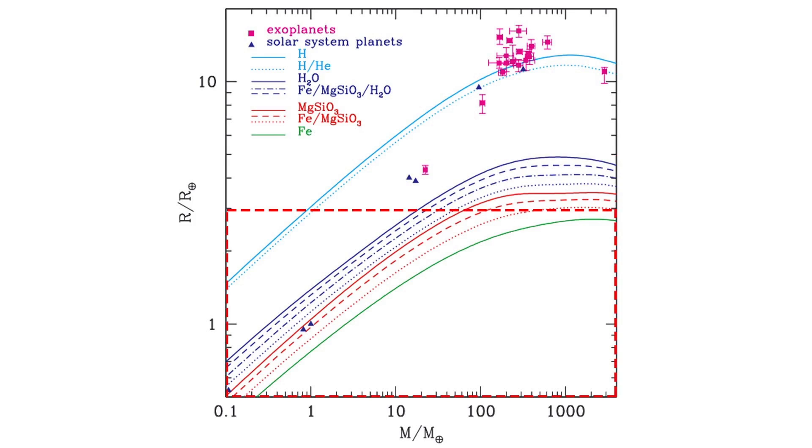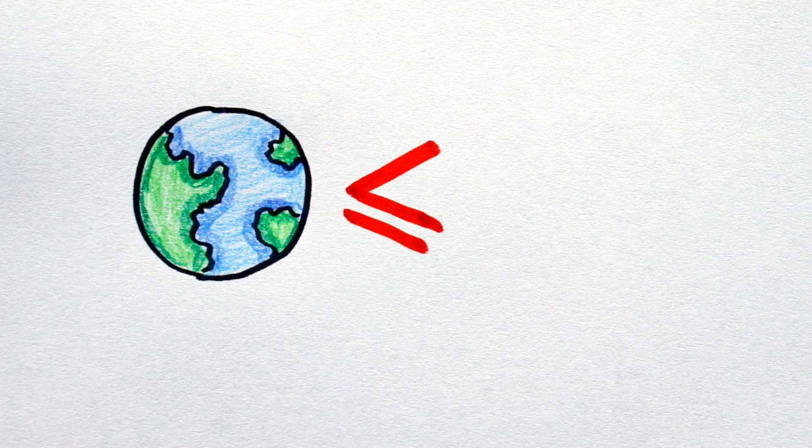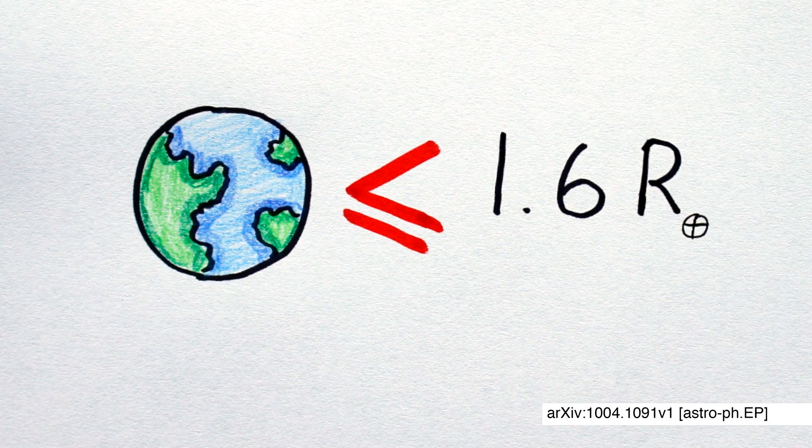Now, again, the eagle-eyed will become vocal and say, hold on, the terrestrial band clearly extends above the 3 radius line. And again, the eagle-eyed are perfectly correct in pointing this out, but check out the masses involved. These are not the masses of terrestrial planets, and anyways, scientists have stated that the majority of rocky planets will have a radius no larger than 1.6 Earth radii.